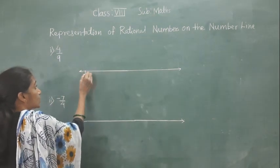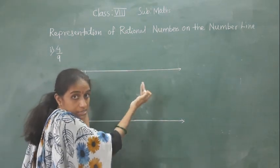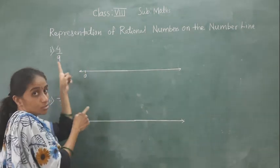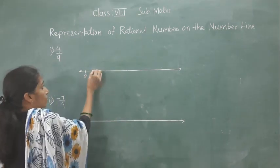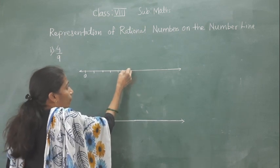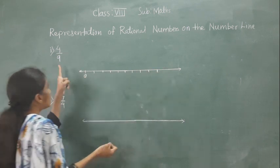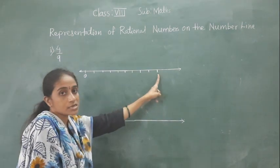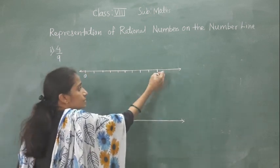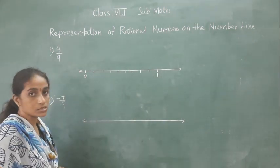Now here I will represent 0. Since 4 upon 9 is a positive number, it will come to the right side of 0. So 4 upon 9 — denominator is 9, so 9 equal parts. Count: 1, 2, 3, 4, 5, 6, 7, 8, 9. This is 0 and this is 1, so in between 0 and 1 we have to make 9 equal parts.